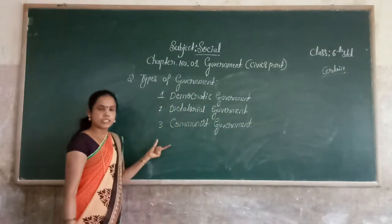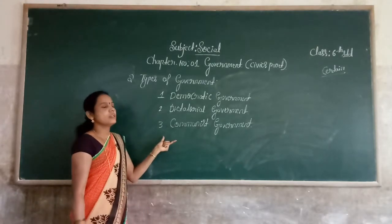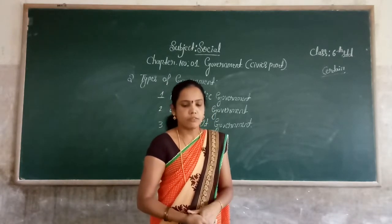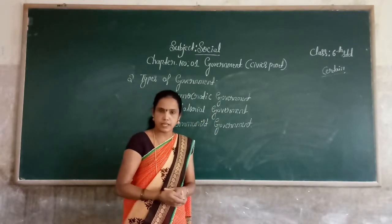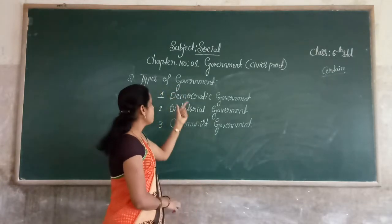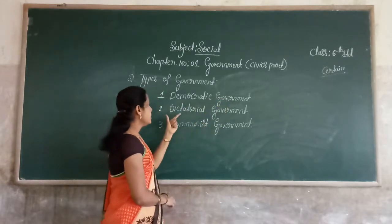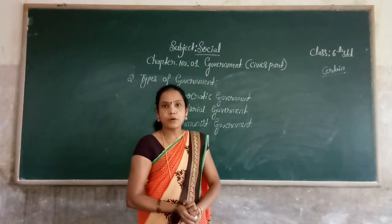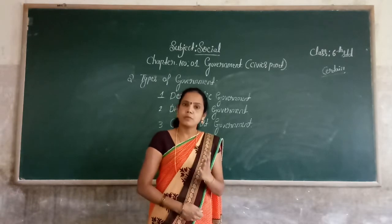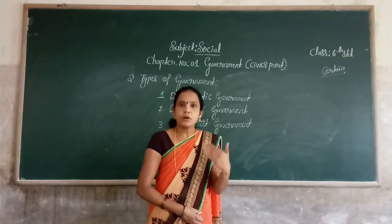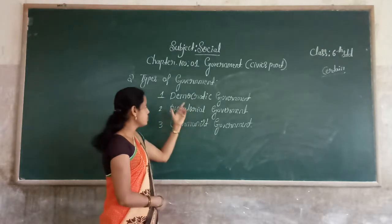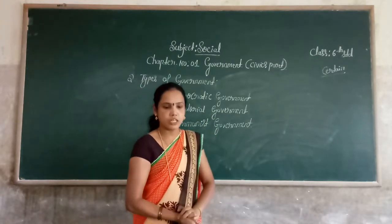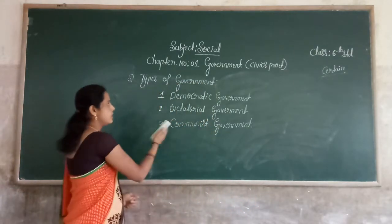We have already discussed the meaning of government. Now we will discuss types of government. There are many types of government, but the important types are as follows: first one is democratic government, second one is dictatorial government, and third one is communist government. These are the important types of government.